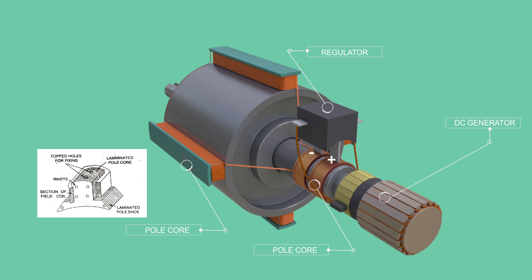This DC current is supplied either from an external source or from a small DC generator fitted on the same prime mover. Such alternators are called self-excited.